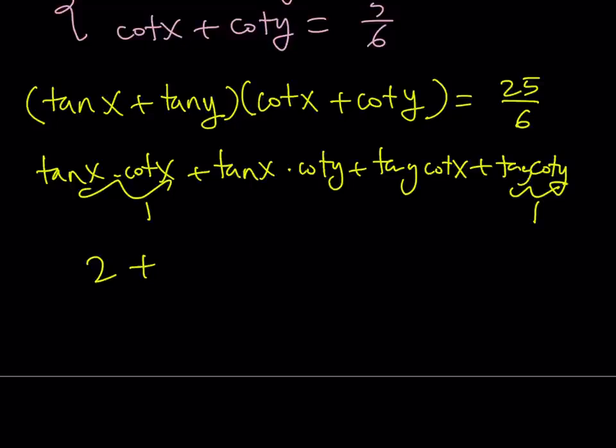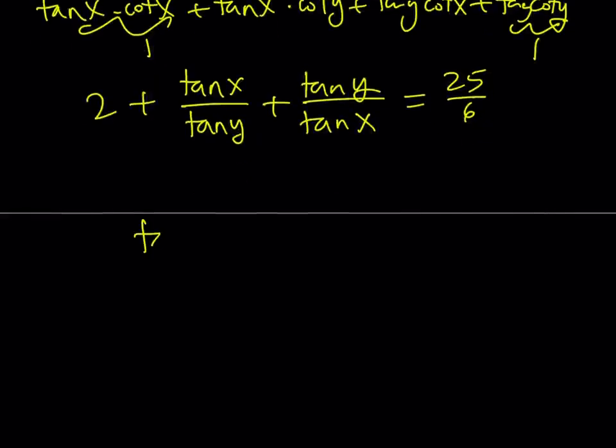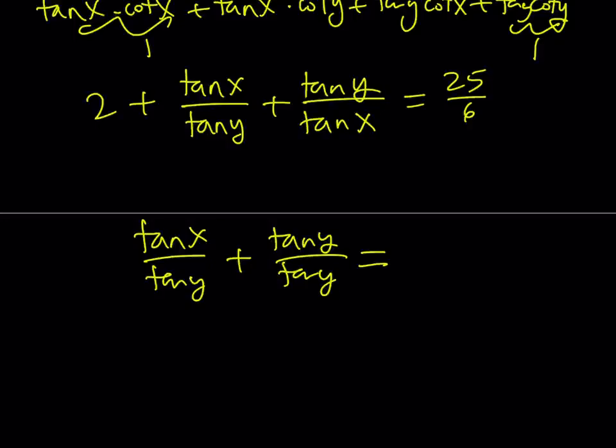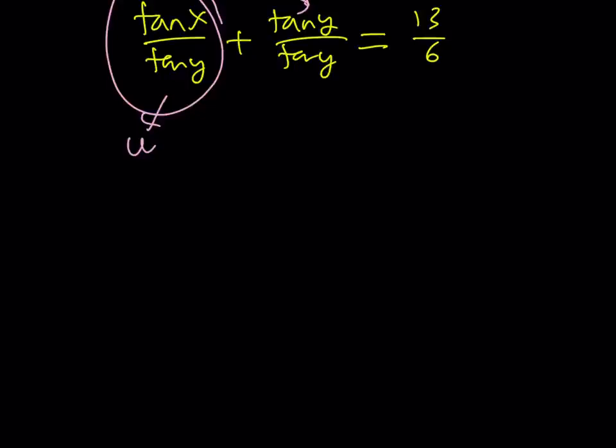At this point, I want to write cot y as 1/tan y, so I can put my equation in this form: tan x/tan y + tan y/tan x + 1 + 1, which is 2, and the whole thing is equal to 25/6. 2 is 12/6. If you subtract 2 from both sides, this is going to equal 13/6. Now, what makes the second method really different is we're looking at the ratio. This is the reciprocal of that ratio. So if I call this u, you're going to get u + 1/u = 13/6.